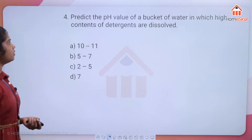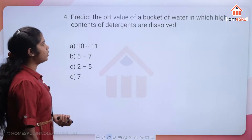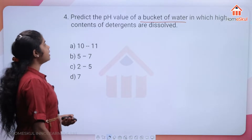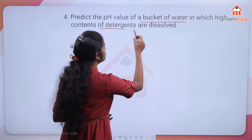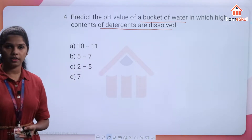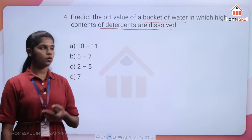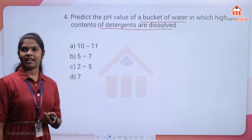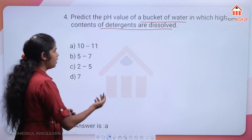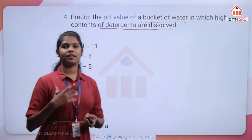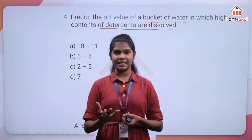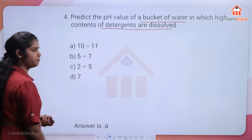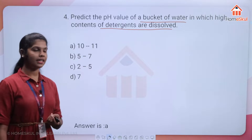Fourth question: predict the pH value of a bucket of water in which a high concentration of detergents is dissolved. A bucket with detergent means the solution is basic in nature and will have a high pH value. The correct option is A, which is 10 to 11.